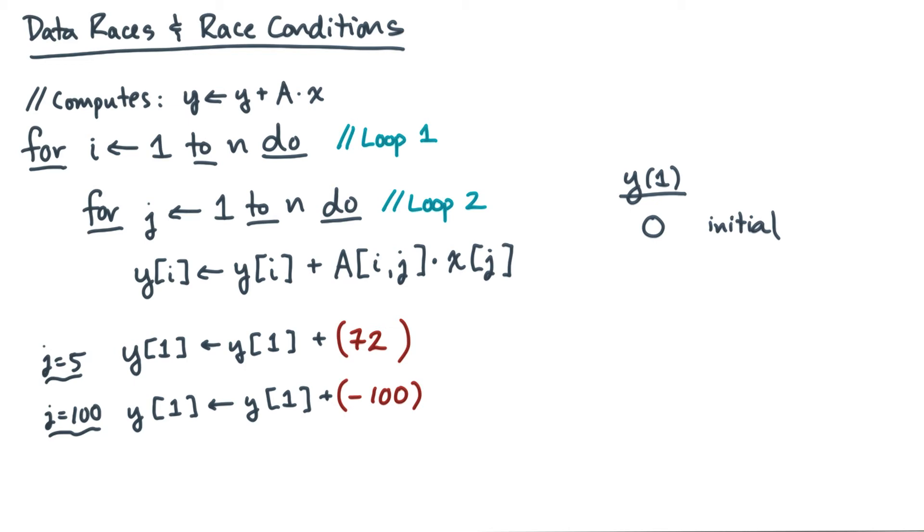Now suppose I simultaneously read y sub 1. Then both statements will get the value 0 when they read y sub 1. Now suppose that j equals 5 executes its write first. Then y sub 1 will get the value of 72.